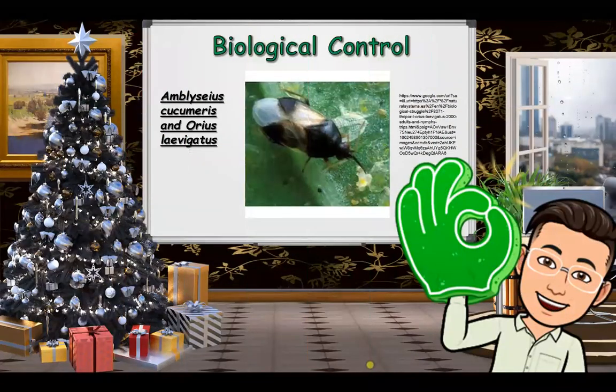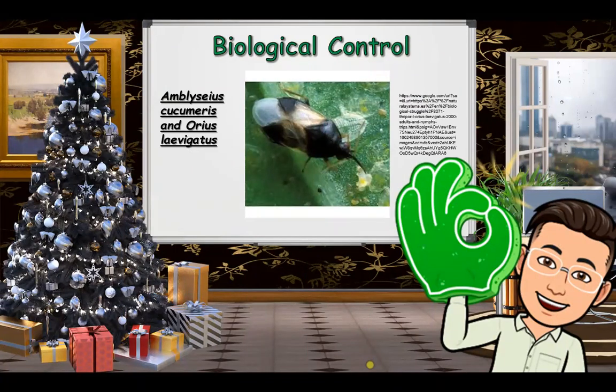To control thrips, we use Amblyseius cucumeris and/or Orius laevigatus. Amblyseius cucumeris is an effective predator of young thrips larvae. Orius laevigatus, another predator, is often applied in conjunction with Amblyseius because they kill adults and larger larval stages of thrips.